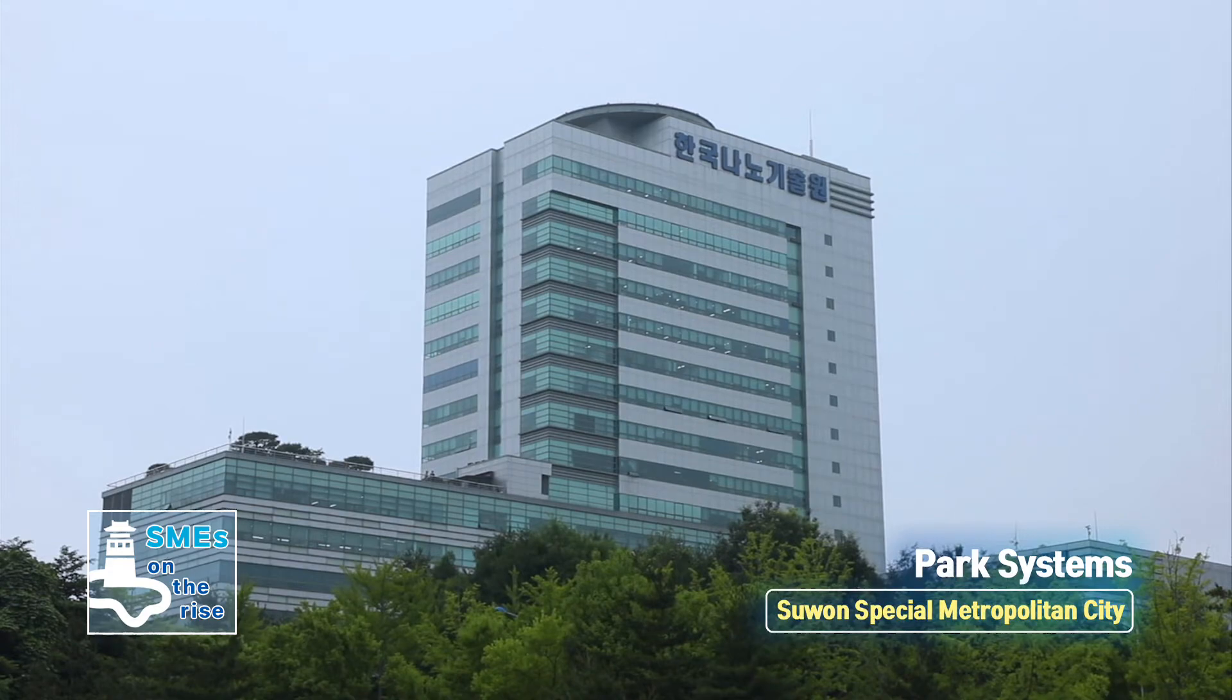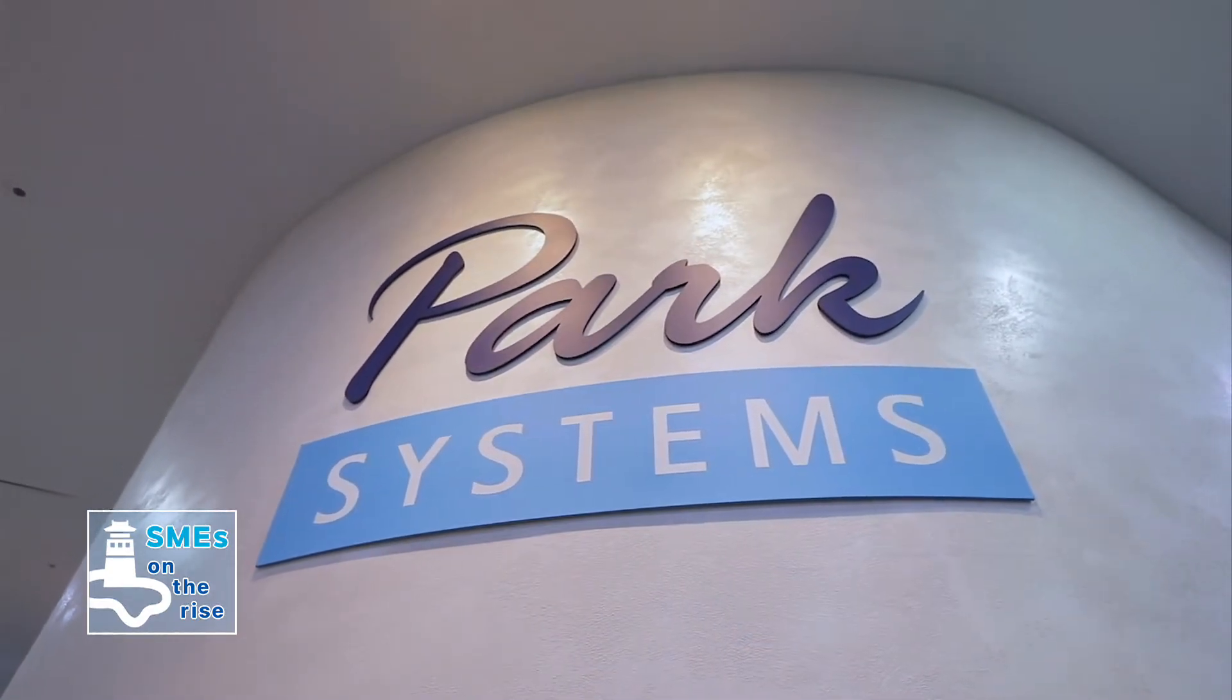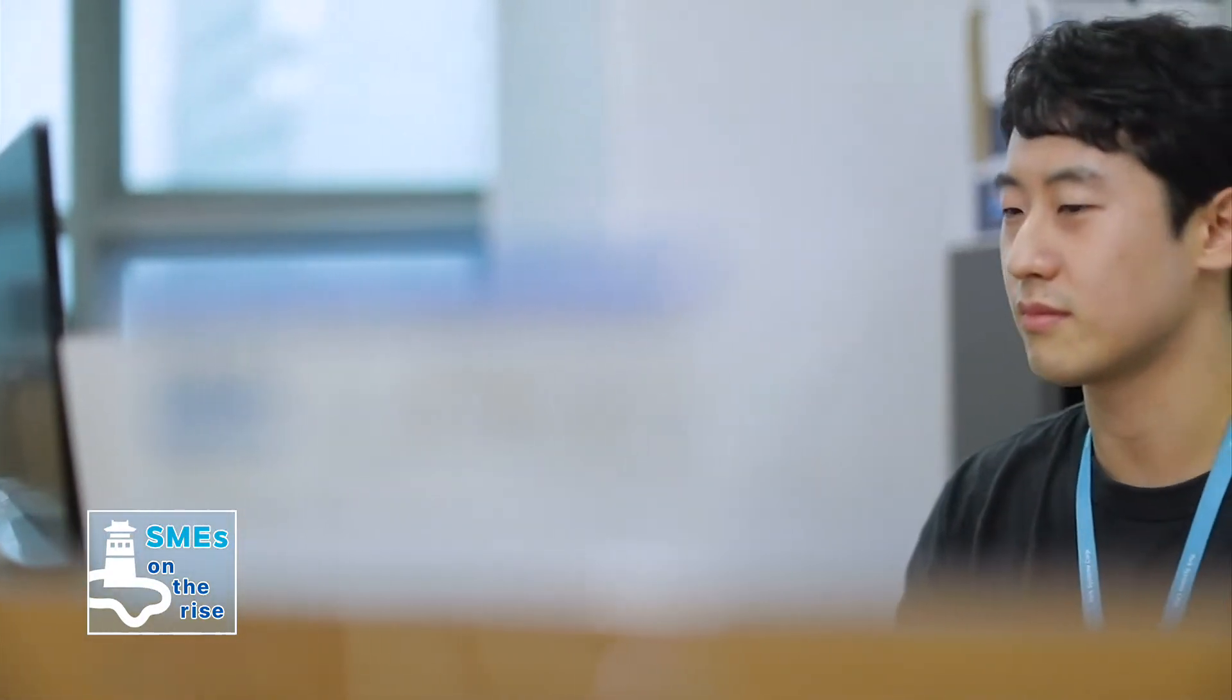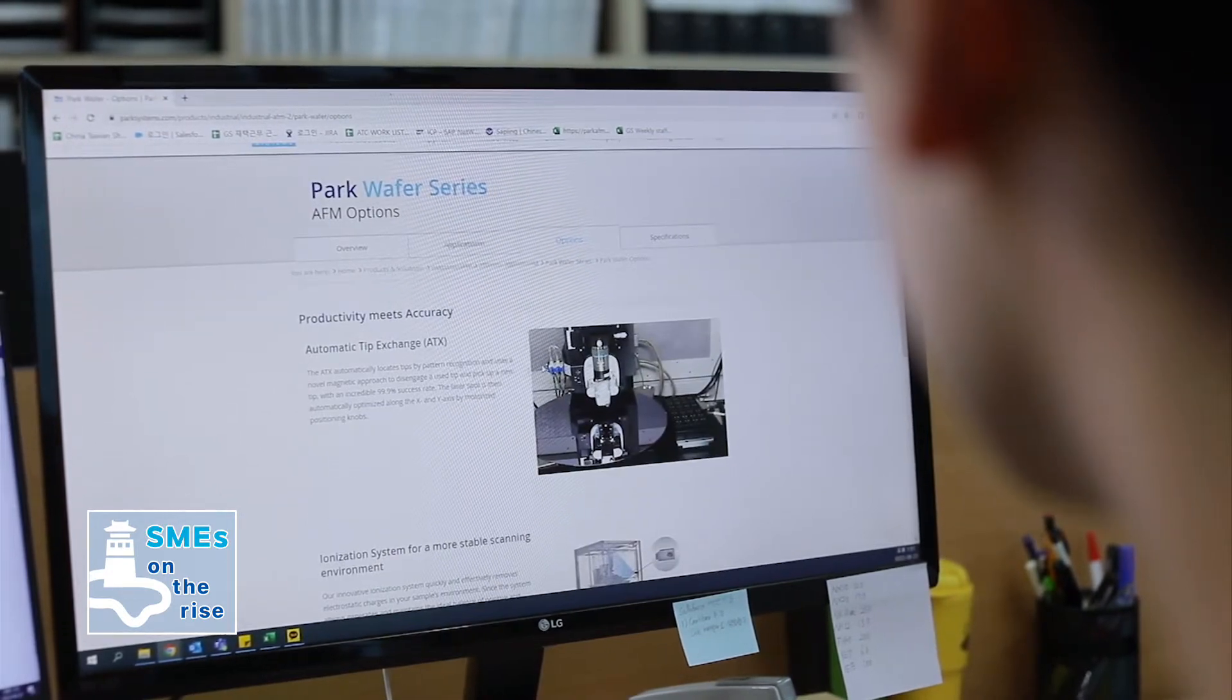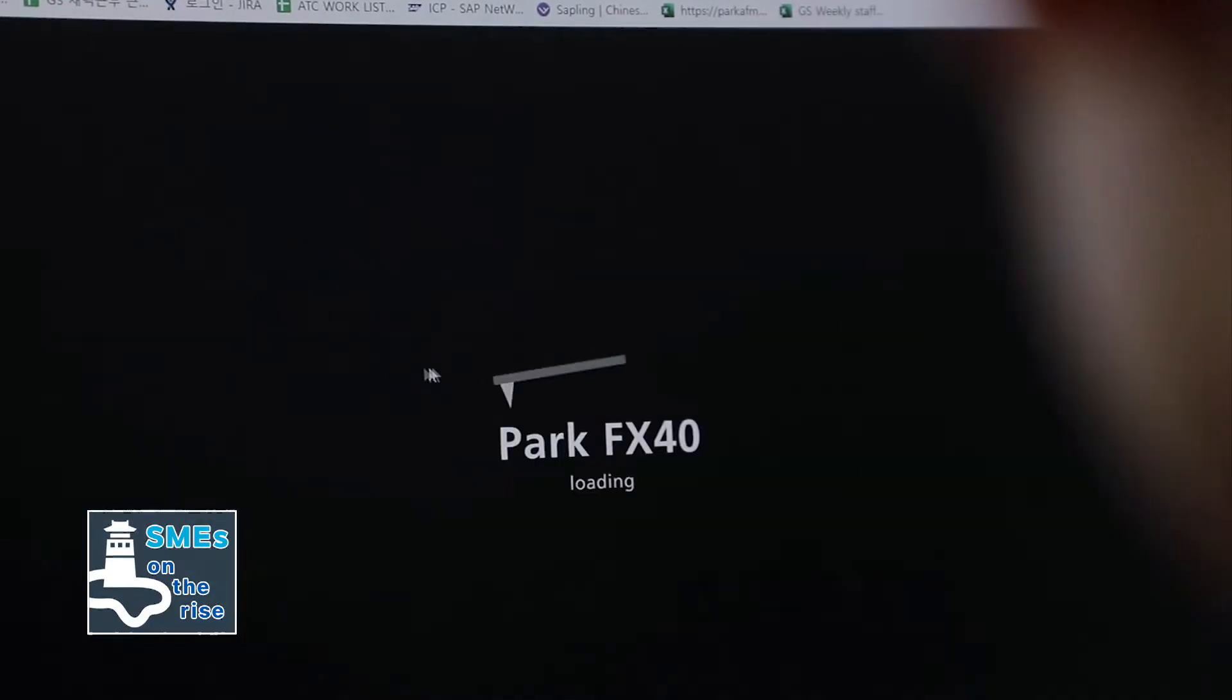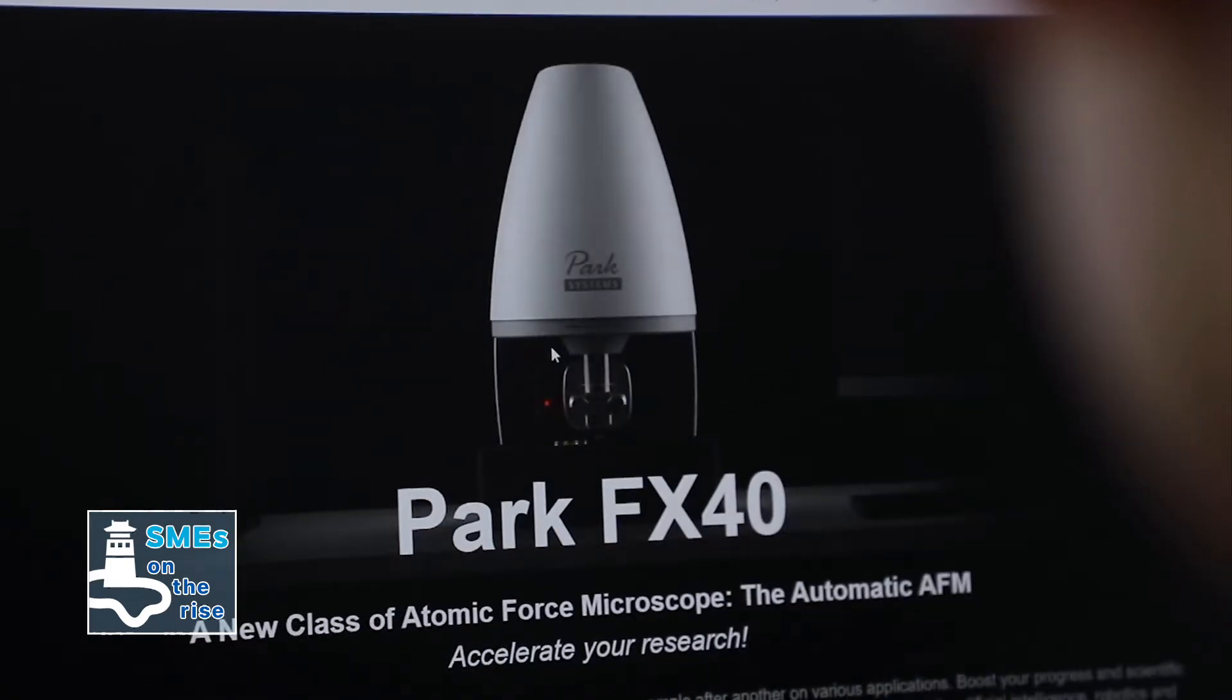Park Systems is located in Korea Advanced NanoFab Center. Since its establishment in 1997, the company has developed and produced atomic force microscopes, which is a type of cutting-edge nanoscale measuring device based on domestically developed source technologies. The technologies of the company have gained recognition from renowned universities, research institutes and companies in domestic and overseas fields.